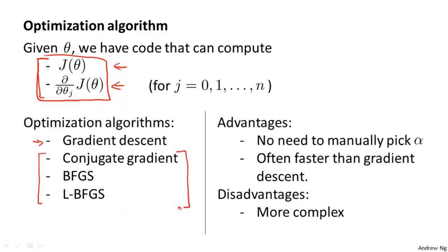These three algorithms have a number of advantages. One is that with any of these algorithms, you usually do not need to manually pick the learning rate alpha. You can think of these algorithms as having a clever inner loop — in fact, a line search algorithm — that automatically tries out different values for the learning rate alpha and automatically picks a good one, so it can even pick a different learning rate for every iteration. You don't need to choose it yourself.